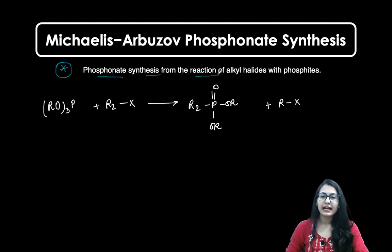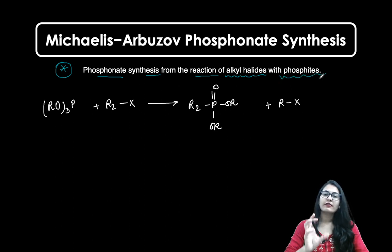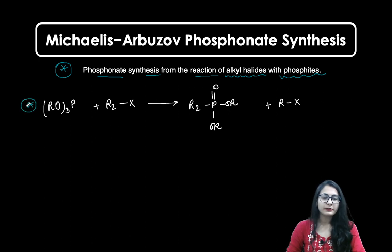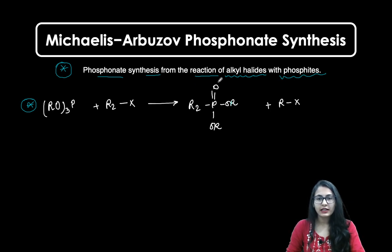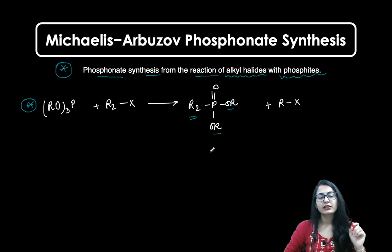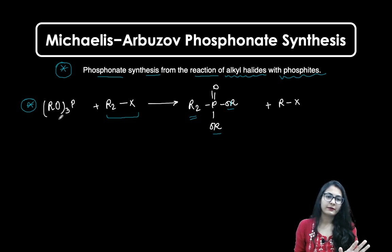Phosphonate synthesis comes from the reaction of alkyl halides with phosphites. This is a very simple reaction, very similar to the formation of the phosphonium ylides that we see as the first step in the Wittig reaction. The phosphonate has a double-bonded oxygen, one alkyl group, and two alkoxy groups. The formation of the phosphonate is from the alkyl halide and a simple phosphite, where phosphorus has three alkoxy groups connected.